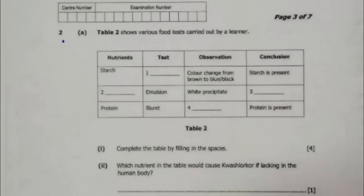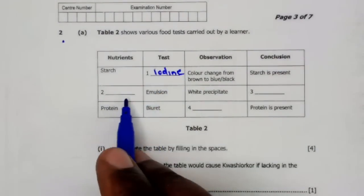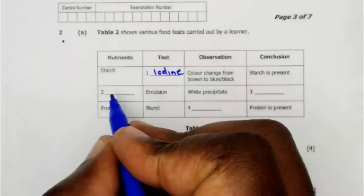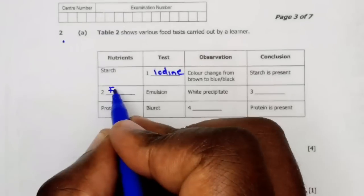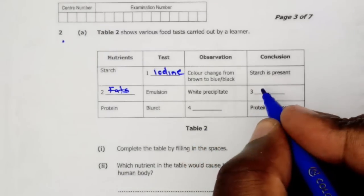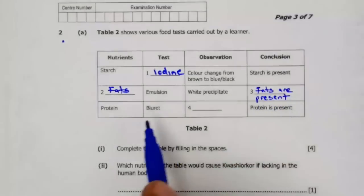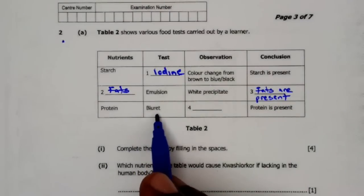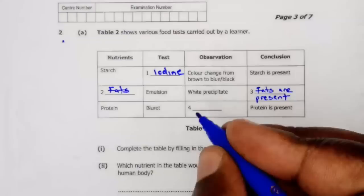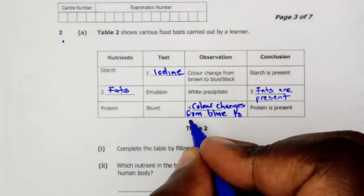We have starch and the test for starch is the iodine test. Then for number 2, we have emulsion and white precipitate. So the test here is test for fats. Then for three, since we have white precipitate, it means that fats are present. Then the next line, we have protein and the biuret test, and the conclusion is saying protein is present, meaning that the color changes from blue to purple.